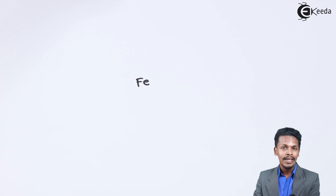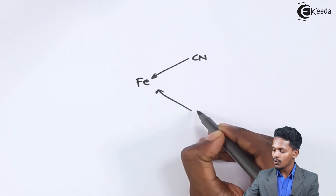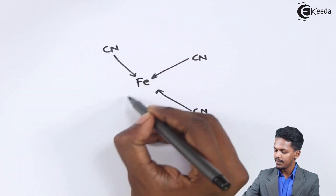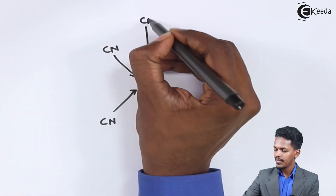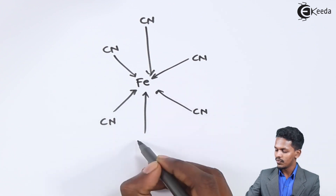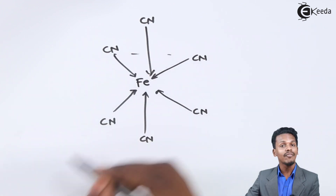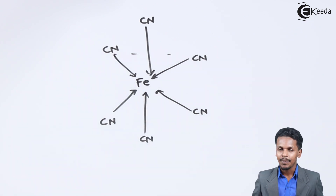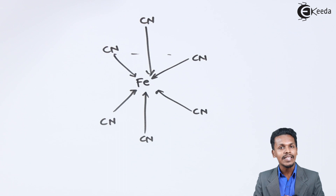In the structure of this complex, Fe is at the center surrounded by six cyanide ligands: the first, second, third, fourth, fifth, and sixth. Therefore, the coordination number of Fe is six, and the geometry is octahedral. Regarding magnetism, there are no unpaired electrons, so this complex is diamagnetic in nature.